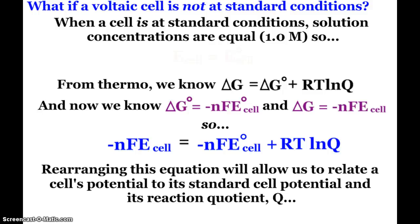All right, so far we've been looking at our E°_cell when our voltaic cells are operating at standard conditions. So what if this voltaic cell is not at standard conditions? Well, standard conditions, remember, is typically 25 degrees Celsius, 1 atmosphere of pressure, and concentrations of 1 molar.